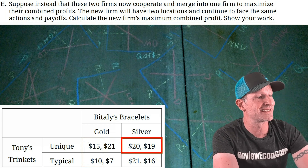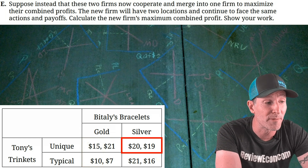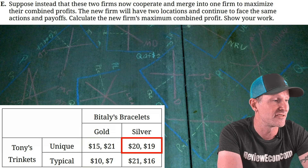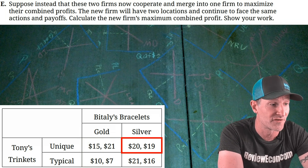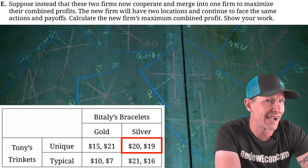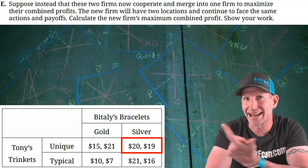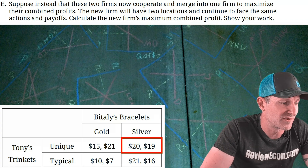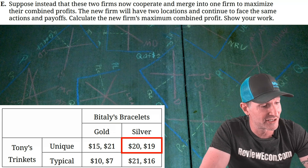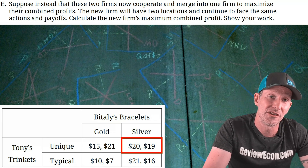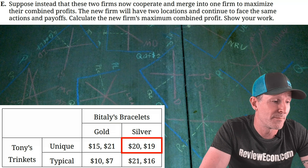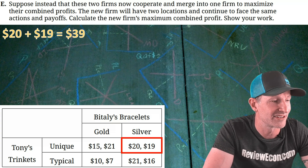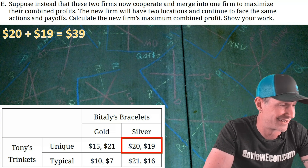Part E: the two firms cooperate and merge to maximize combined profits. We add up payoffs in all quadrants and find the largest total. The maximum is in the quadrant where Bitly produces silver and Tony produces unique — $20 plus $19 equals $39 combined profit. That's the answer.